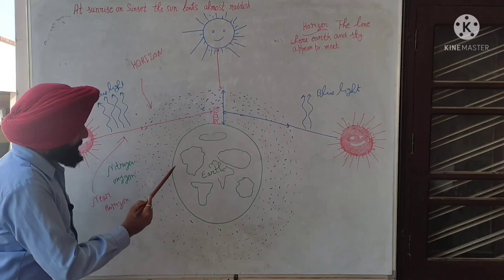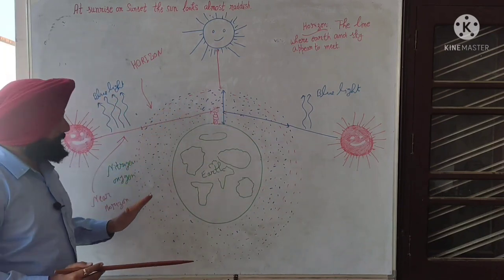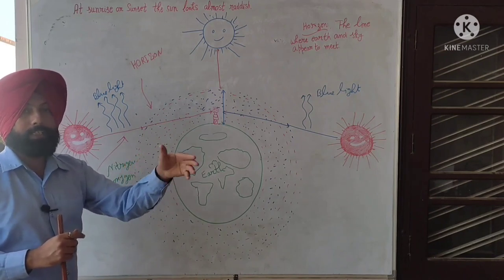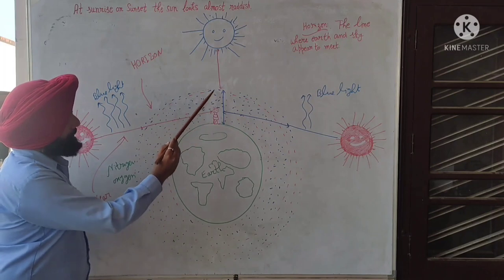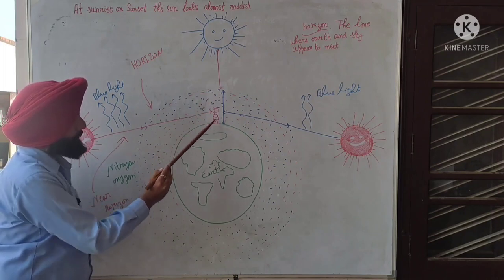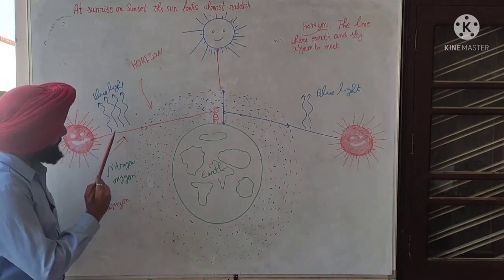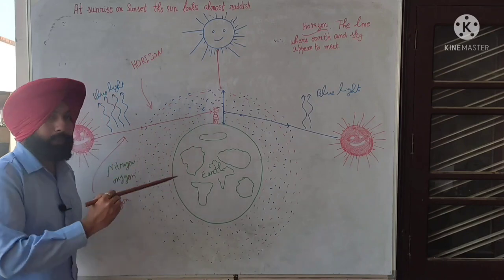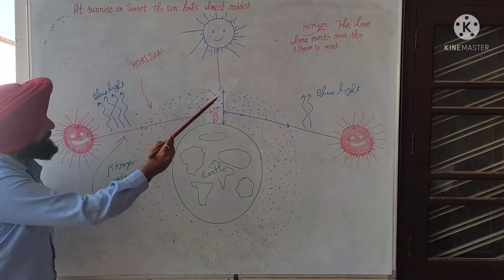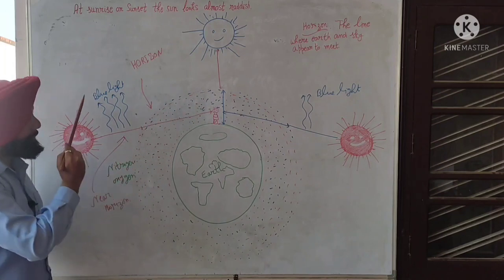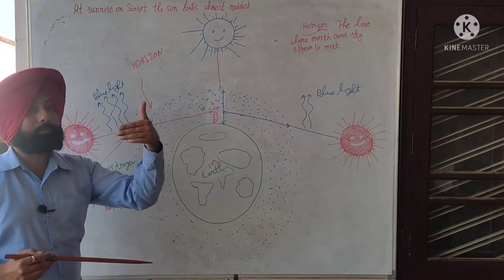Now here is our earth and atmosphere around it in which nitrogen and oxygen are present more than other gases. For the observer Tippu here, the distance in the atmosphere in comparison of this, when sunrise is happening, the light coming towards Tippu's eyes near the horizon, where the sky and earth meet, along this imaginary line, the distance is much greater.